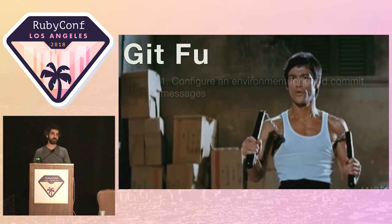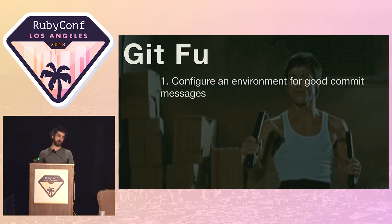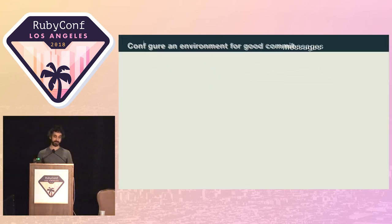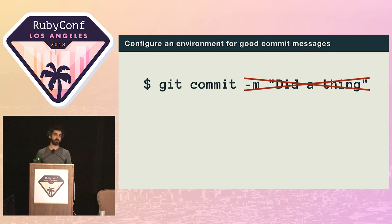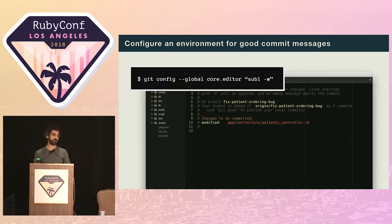First up: make sure you're set up for writing good commit messages. This meant getting out of the habit of committing with dash M. The command line isn't an environment that encourages you to write detailed messages. Instead, configure Git so it knows your editor of choice. That way you'll find yourself in a friendly and familiar environment, and you're much more likely to put some detail into your commit messages.